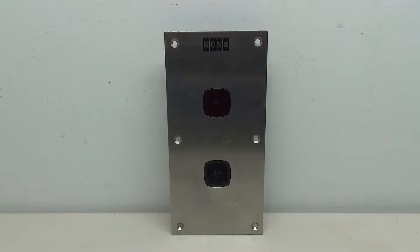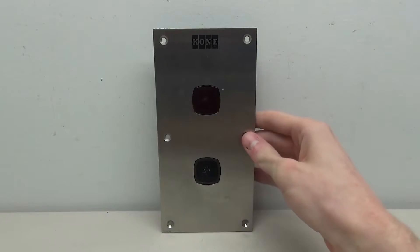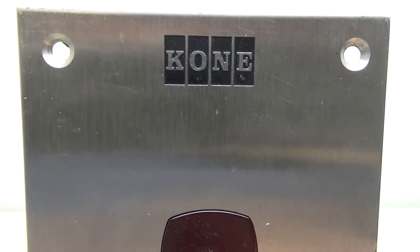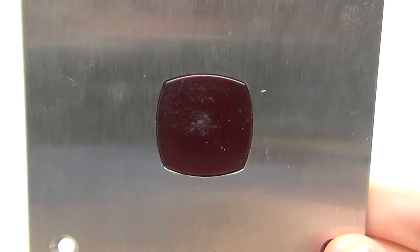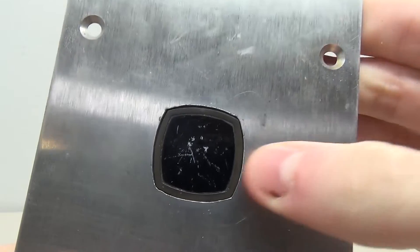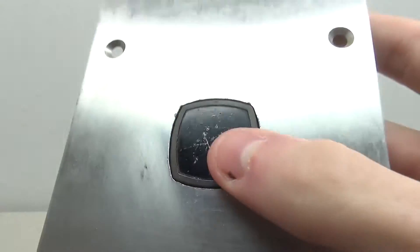All right, hello everybody and welcome to another elevator parts video. Today we're going to be taking a look at this Kone M series button. Let's take a closer look at the front of the button here. At the top you can see it says Kone because obviously it's a Kone. We've got the little red light here in the middle which obviously lights up red, and then we've got the button which presses and it doesn't press very much.